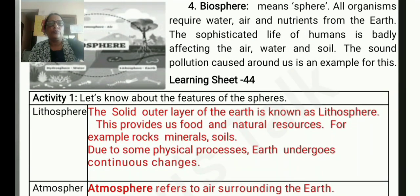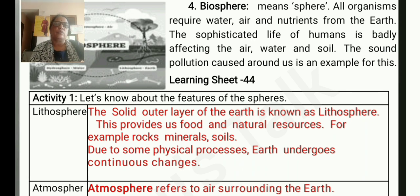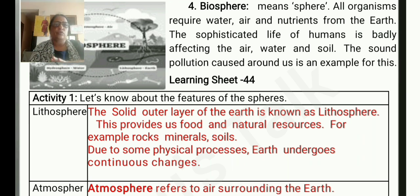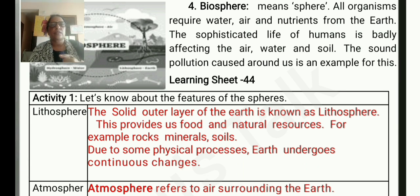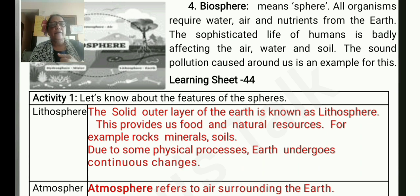Learning Sheet 44, Activity 1 — let us know about the features of the spheres. Lithosphere: the solid outer layer of the earth is known as the lithosphere. It provides us food and natural resources — for example, rocks, minerals, and soils. Due to some physical processes, the earth undergoes continuous changes.